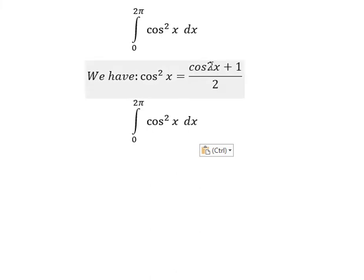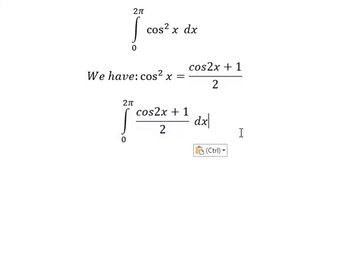We substitute this identity into the integral. Now we factor out 1/2 outside the integral.